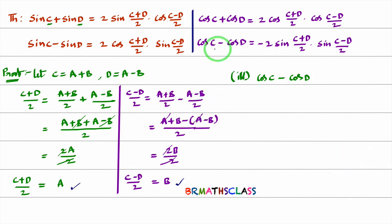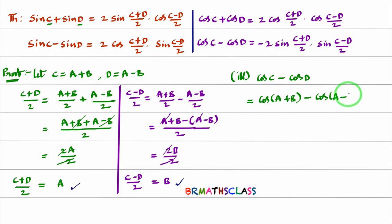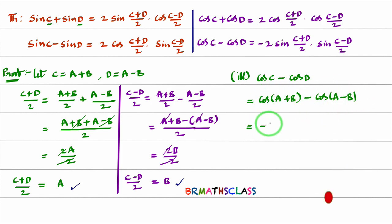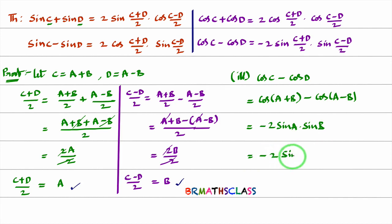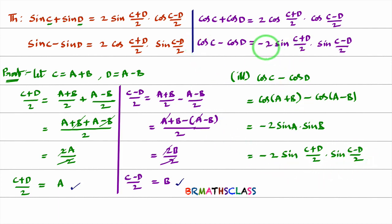Now we will prove the fourth result: cos C − cos D. With C as A+B and D as A−B, this becomes cos(A+B) − cos(A−B). The formula for cos(A+B) − cos(A−B) is −2 sin A sin B. Substituting A = (C+D)/2 and B = (C−D)/2, we get cos C − cos D = −2 sin((C+D)/2) · sin((C−D)/2). We use these results very frequently while solving exercise problems. I hope you understand this class.